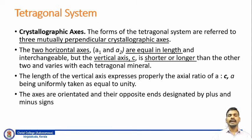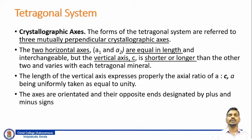The length of the vertical axis expresses the axial ratio of the horizontal axis to the vertical axis, that is a to c, where the length of the horizontal axis is taken as equivalent to the unit value. The axes are oriented in their opposites and are designated by plus and minus signs.